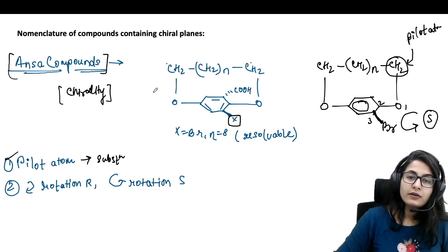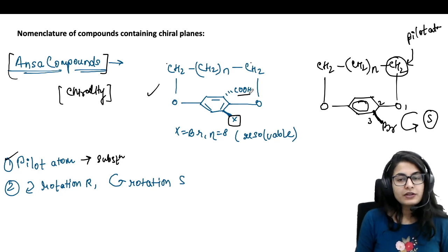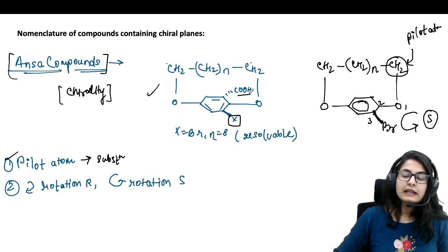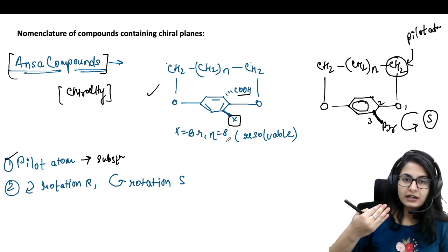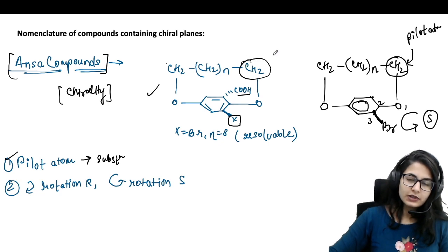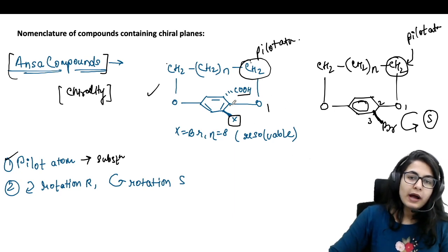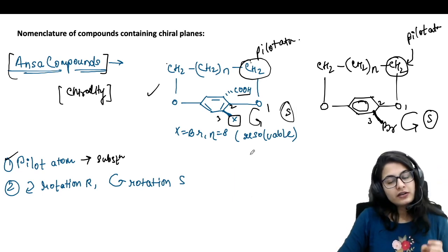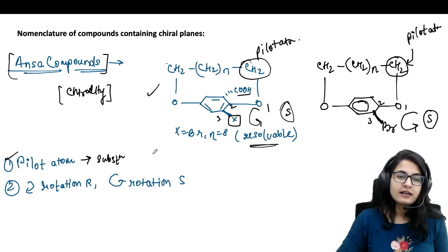You might be confused that there is also a COOH group in the benzene ring — is it going to be considered for nomenclature? No, only the substituent pointing outwards is considered. Once again: pilot atom, then number one, two, and three. Here it is anti-clockwise, so it is S. These are the resolvable and chiral ansa compounds.